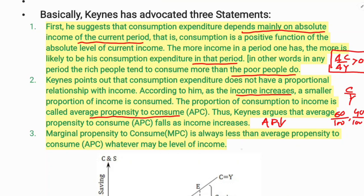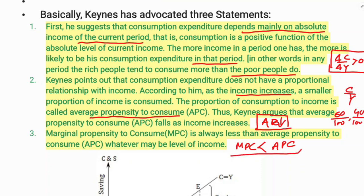As income increases, marginal propensity to consume is always less than average propensity to consume, whatever the level of income may be. So marginal propensity to consume will always be lower than average propensity to consume. These are the three statements: positive relationship between income and consumption; APC declines; and MPC is less than APC.